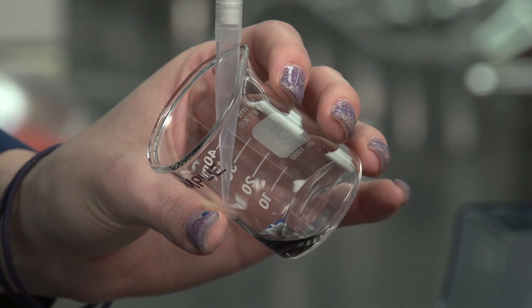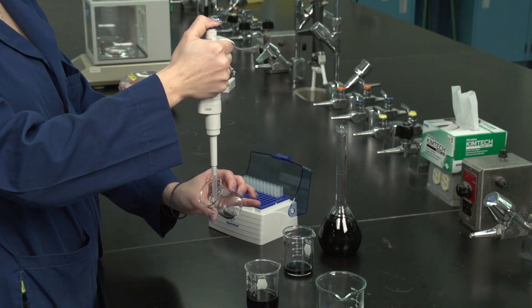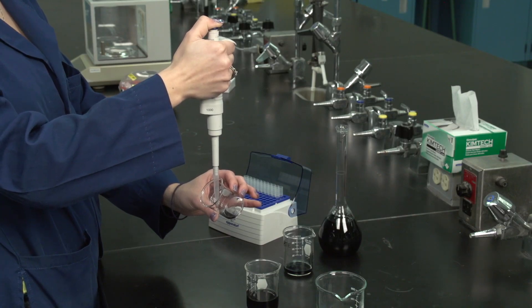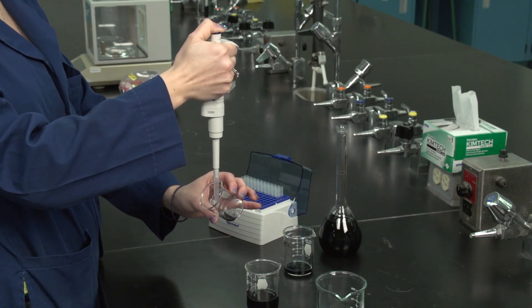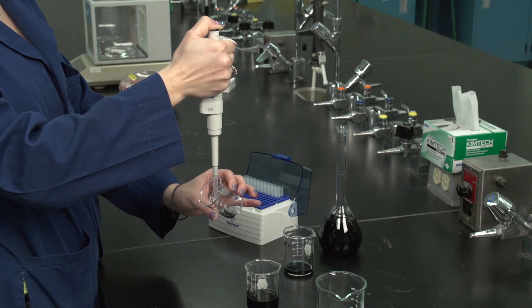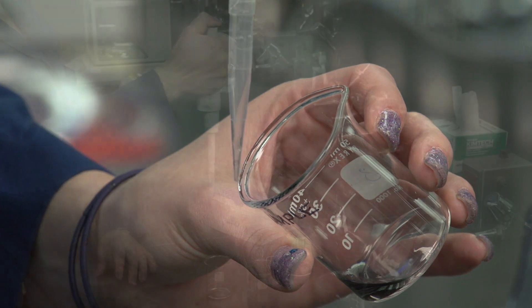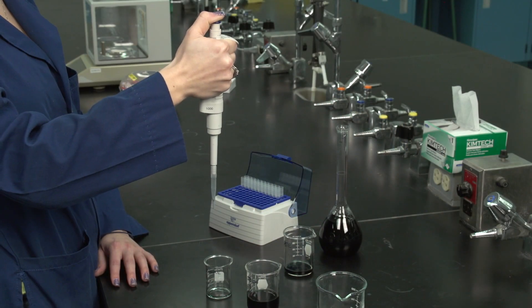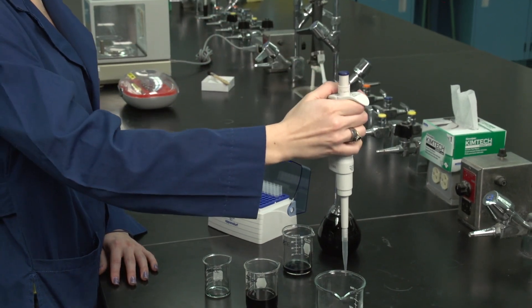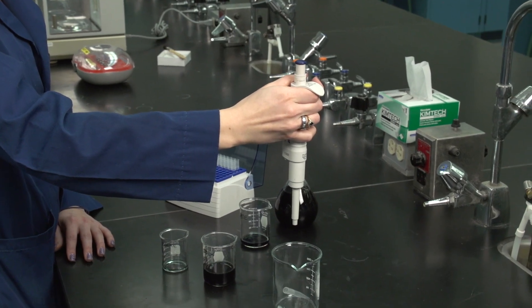Wait until the liquid stops flowing. Press down on the plunger to the second stop until the tip is completely empty. Hold down the plunger and guide the tip up the inner wall of the receiving vessel. Allow the plunger to slide up slowly. Eject the tip by pressing the ejection button on the side of the pipette.